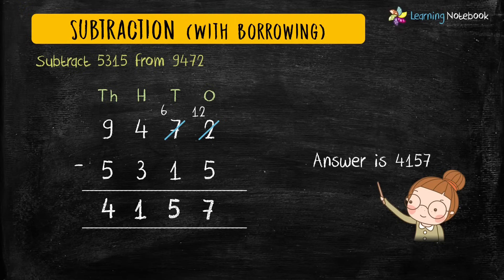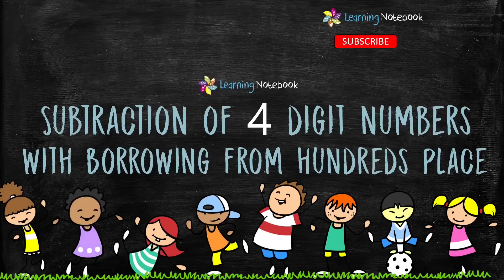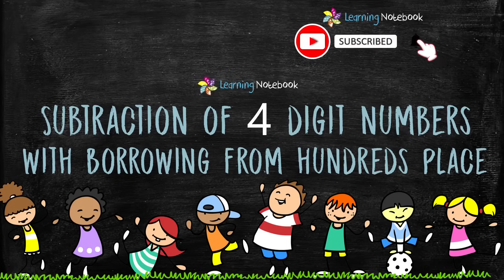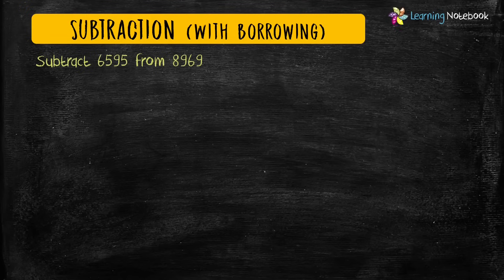This is how we do subtraction of four-digit numbers with borrowing from tens place. Now let's learn subtraction of four-digit numbers with borrowing from hundreds place. The question is: subtract 6595 from 8969.